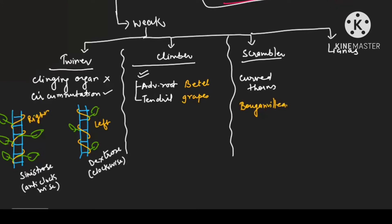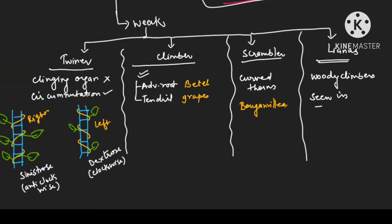Lianas are climbers that have become woody. Generally climbers are green in color for flexibility, but lianas are ones in which climbers have also started showing secondary growth — so we call them woody climbers. They are generally seen in tropical rainforests where continuous rain occurs, resulting in secondary growth. These are the different forms of stems.